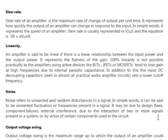Slew rate of an amplifier is the maximum rate of change of output per unit time. It represents how quickly the output of an amplifier can change in response to the input — in simpler words, it represents the speed of the amplifier. Slew rate is usually expressed in volts per microsecond.